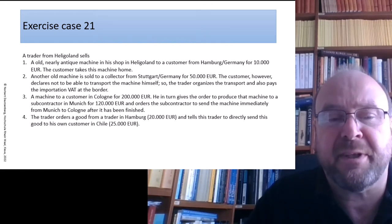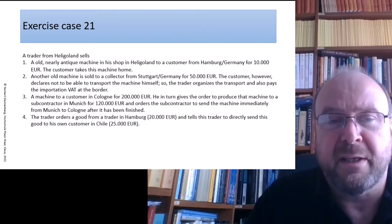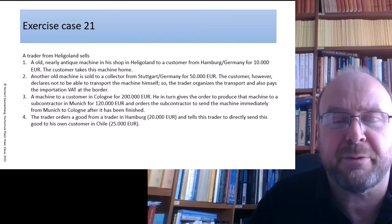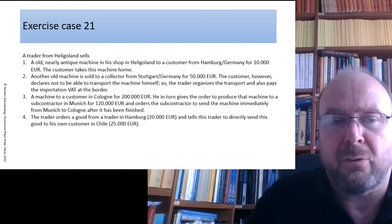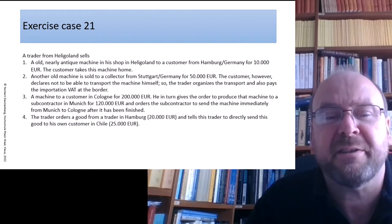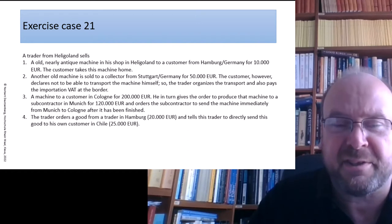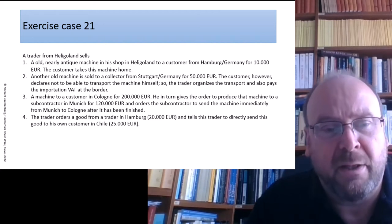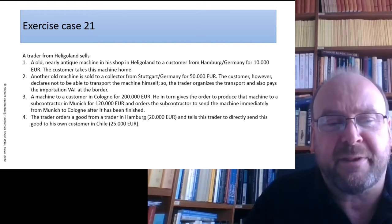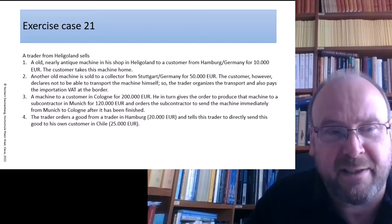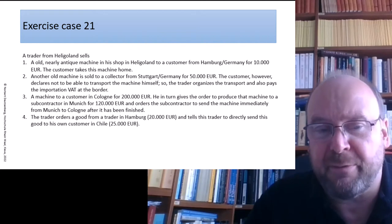Number three: a machine is sold to a customer in Cologne, Germany, for 200,000. That machine is not in stock — somebody ordered a new machine. So our trader in Heligoland gives the order to produce that machine to a subcontractor in Munich for 120,000 Euro, and then says to the subcontractor: please send this machine immediately from Munich to Cologne to my own customer after it has been finished, because it would be a waste of time and transportation costs to bring it first to Heligoland and then back to Cologne.